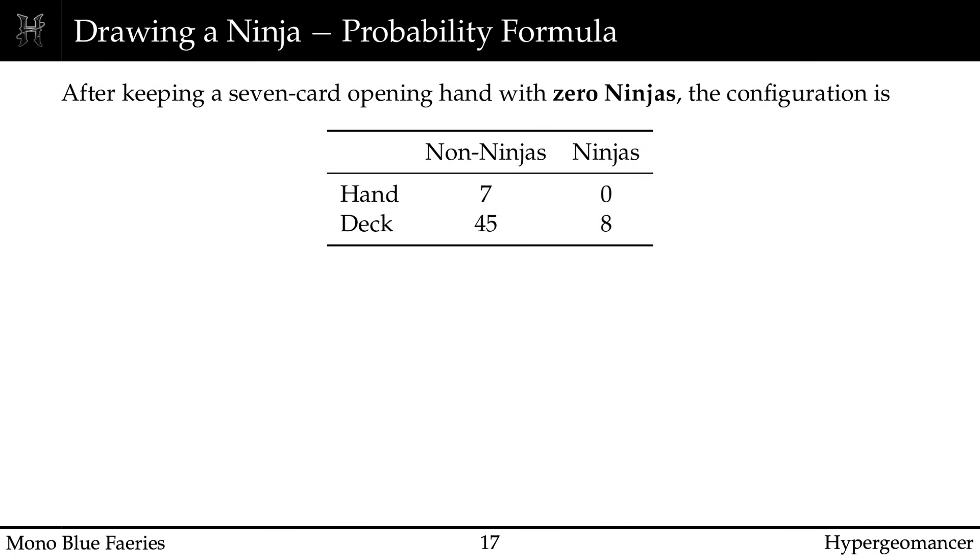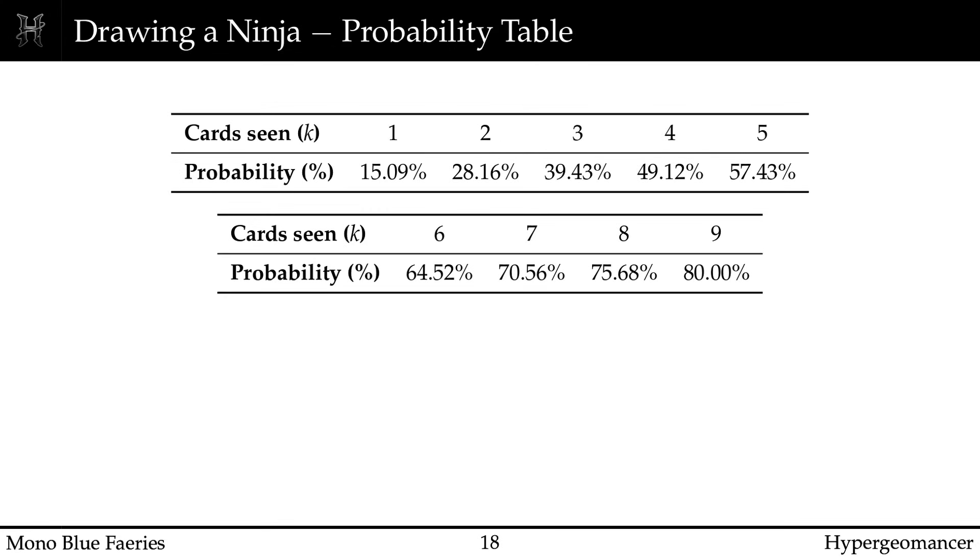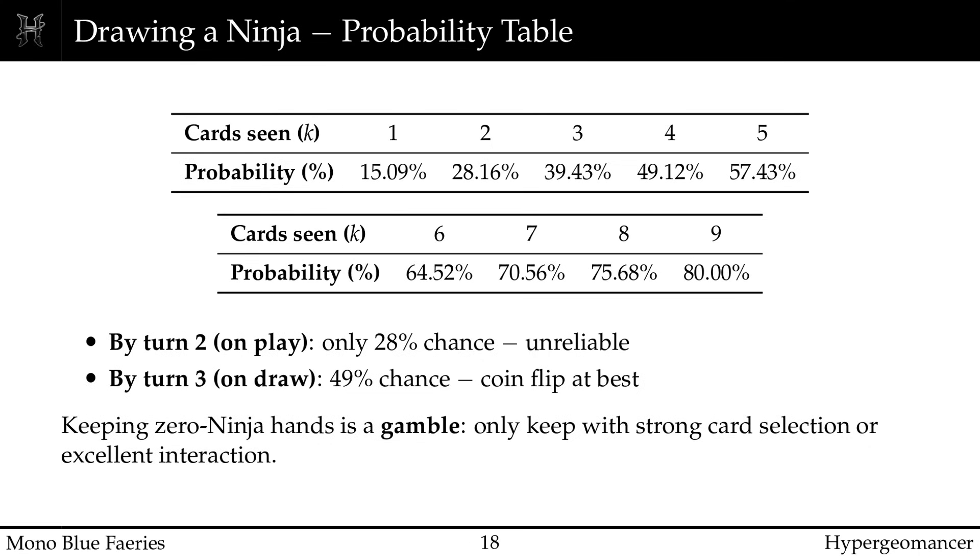Now let's examine a common trap, hands with no ninjas. After keeping such a hand, your deck has 53 cards, 8 of which are ninjas. The probability of drawing at least one ninja follows the same hypergeometric logic as before. The results are grim. By turn 2 on the play, you have a 50% chance, on the draw 28%. By turn 3 on the draw, still only 49%. Not even a coin flip. Even with Faerie Seer, the odds remain unreliable. Keeping zero ninja hands means hoping multiple things go right in sequence, and tempo decks cannot afford hope. Only keep these hands with strong interactions or exceptional card selection.